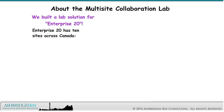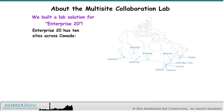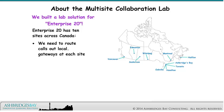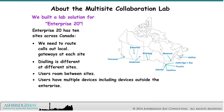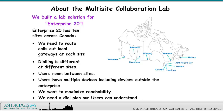Enterprise 20 has 10 sites across Canada. We need to route calls out local gateways at each site. Dialing is different at different sites. Users roam between sites. Users have multiple devices, including devices outside the enterprise. We want to maximize reachability. And we need a dial plan our users can understand.